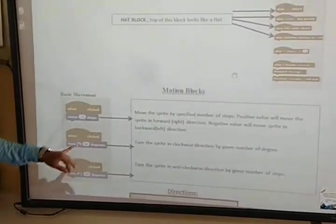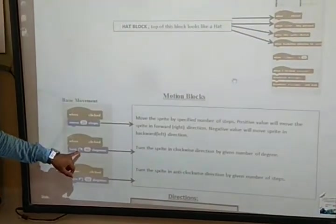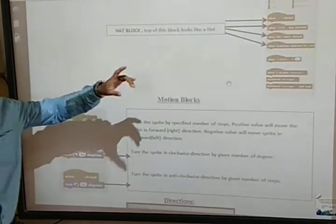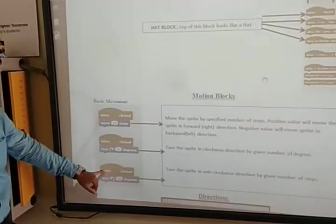Then next one is when clicked turn 90 degrees. This is clockwise. So sprite will turn clockwise 90 degrees. Then the next step.